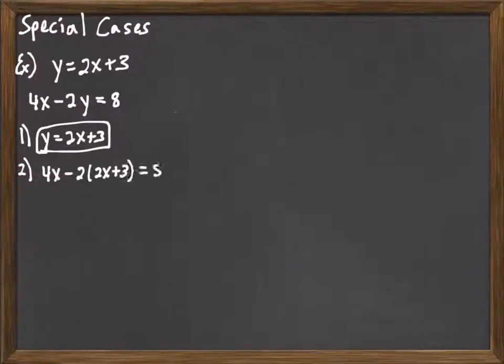Remember we then take that result and substitute it into the other equation, the one we haven't touched yet, for that variable. So the y in 4x minus 2y equals 8 gets replaced with 2x plus 3. That produces an equation for us that has only a single variable. You may want to pause the video and take a look at that problem and give it a shot.